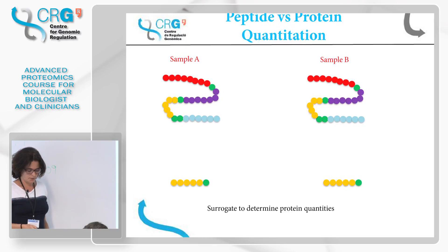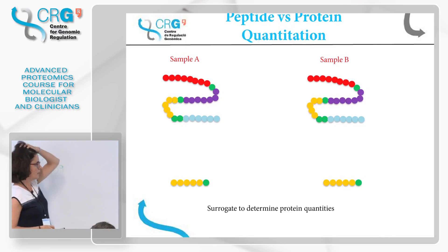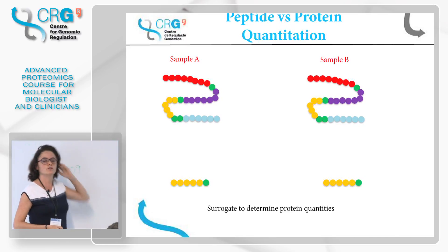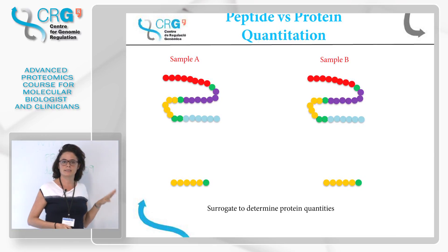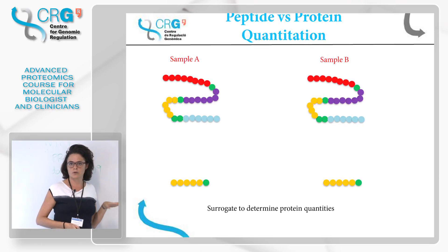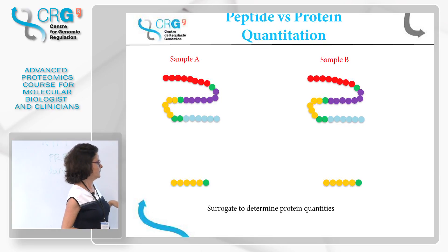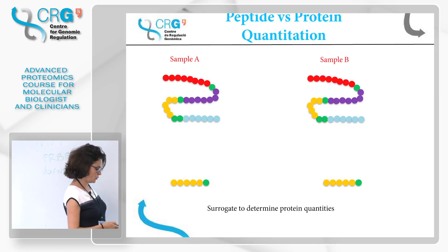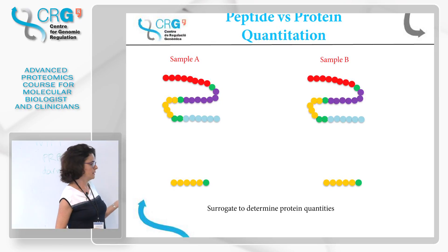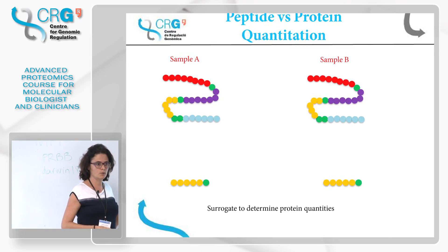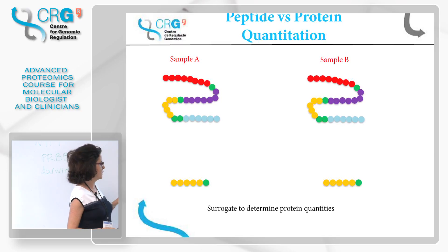Another consideration: as we saw yesterday, we are still not able to work directly with proteins as well as we work with peptides. So what we use for quantification is the peptide — the peptide is a surrogate to determine protein quantitation.